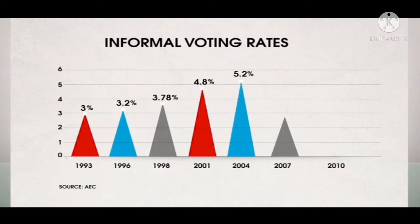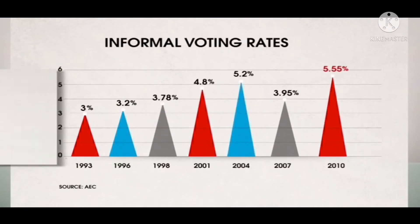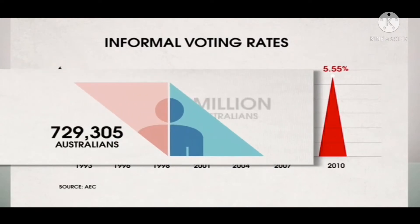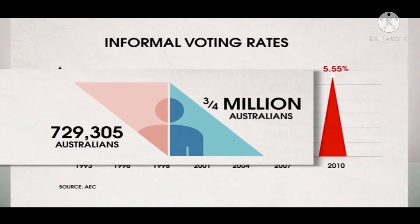that is, those that are supposed to represent you. It is the parliament that has made the laws about what and who decides if a vote is informal or not.